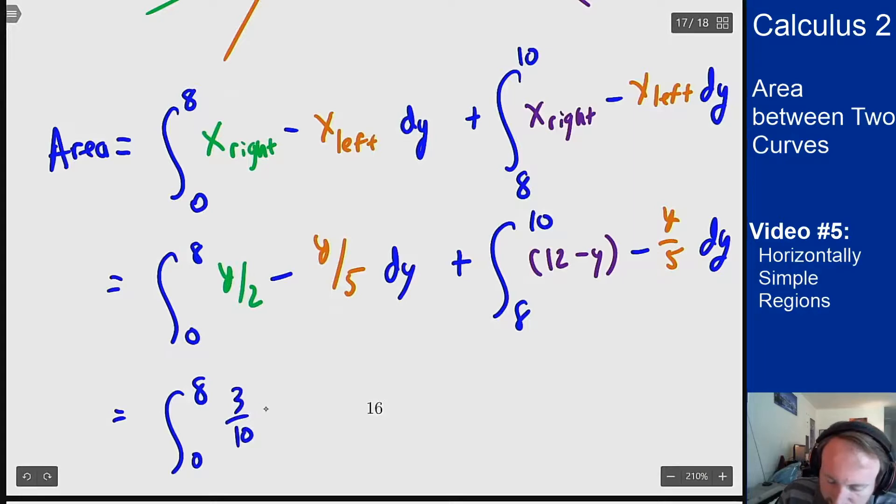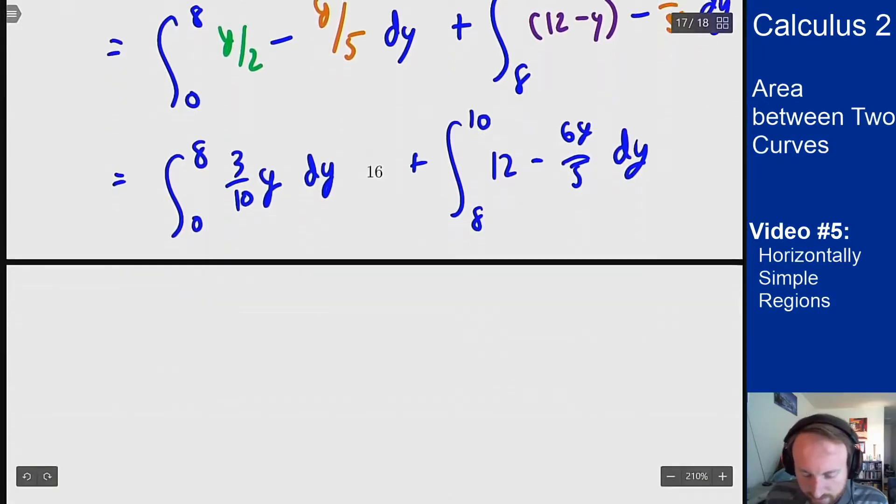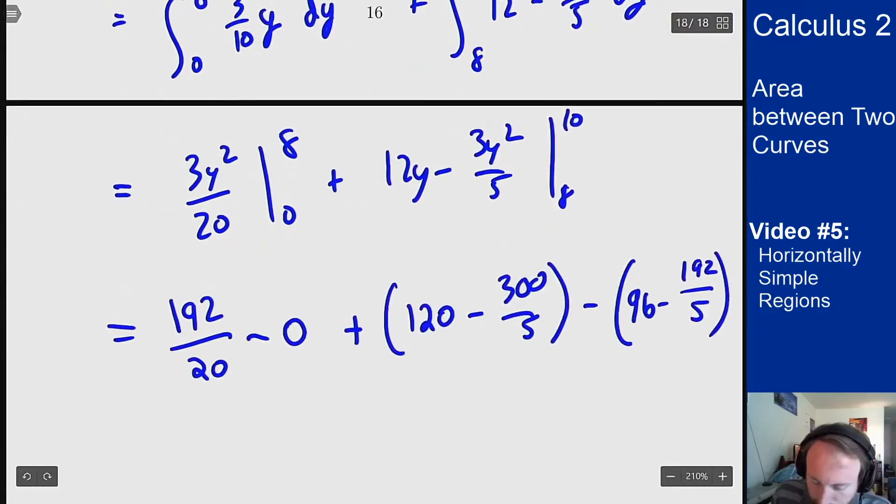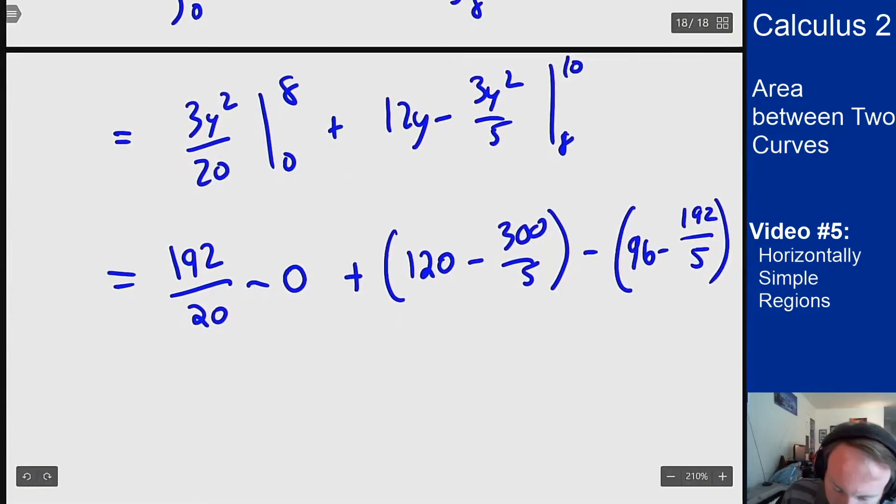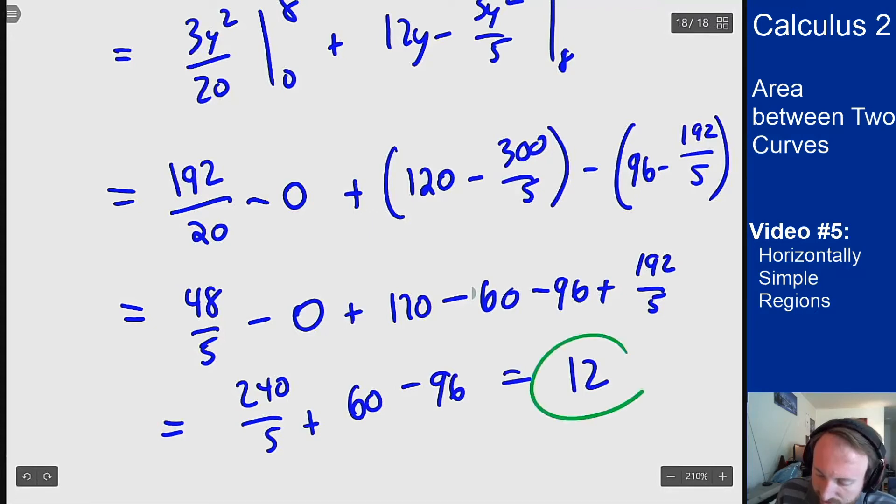Now we're going to solve this out. This becomes 3 tenths y plus an integral from 8 to 10 of 12 minus 6y over 5. We can then find antiderivatives. 3y squared over 20 from 0 to 8 plus 12y minus 3y squared over 5 from 8 to 10. We can plug in our endpoints which gives us that and then we can start simplifying things out. We'll divide some fractions, cancel out some terms. The two denominators with 5 come to a 240 over 5 plus that gives me a 60 minus a 96. 240 over 5 is 48 and this comes out to 12 just like it should.